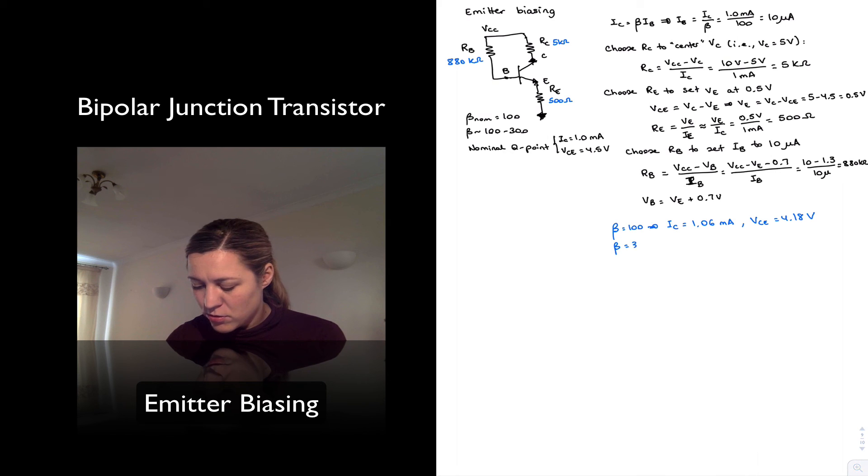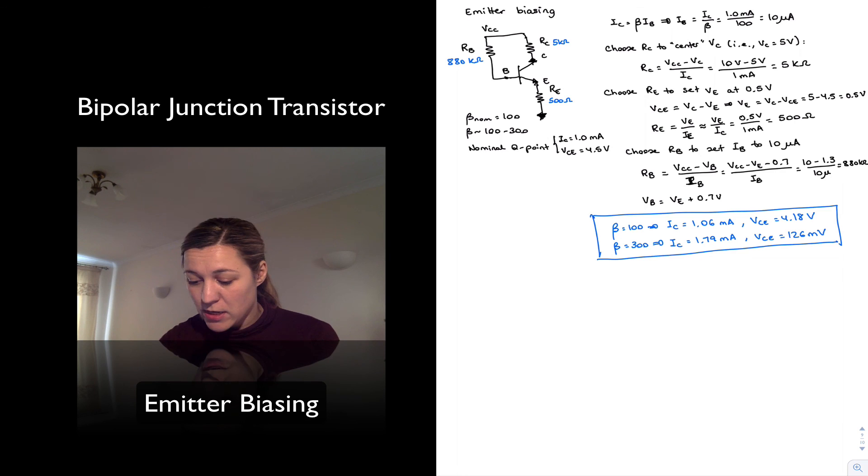Let's look at what happens when beta equals 300. That's where the rubber meets the road. And we get IC being equal to 1.79 milliamps. It's quite a jump. And VCE being equal to 126 millivolts. Oh-oh. We are in saturation mode again.